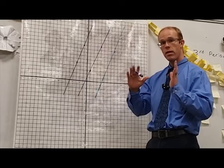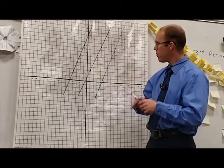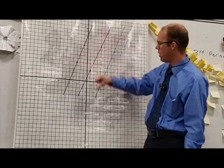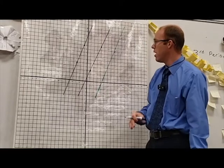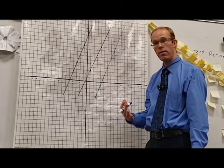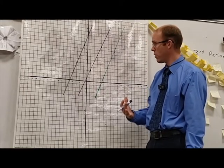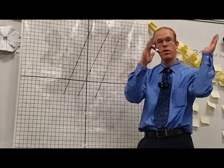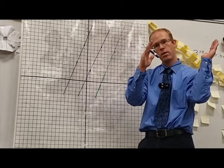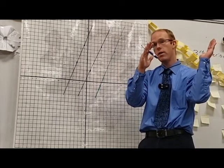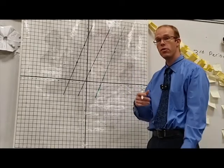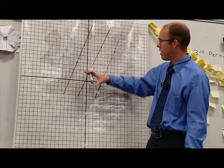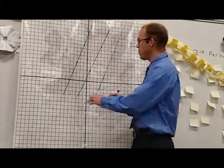Parallel lines are lines that never cross. We can see these three lines right here, which continue forever in both directions. In order to determine if they cross or not, we're going to take a look at the slope. Two lines that go in exactly the same direction with the same slope are never going to intersect each other. So we need to see if any of these lines have the same slope.